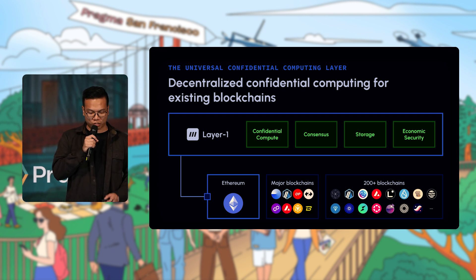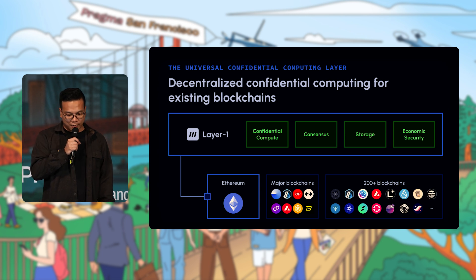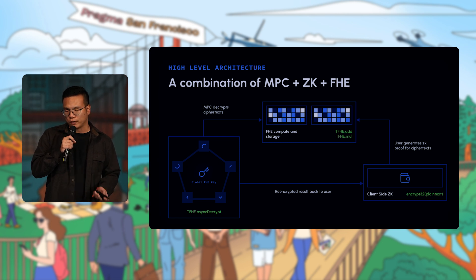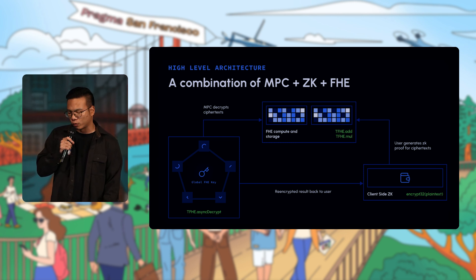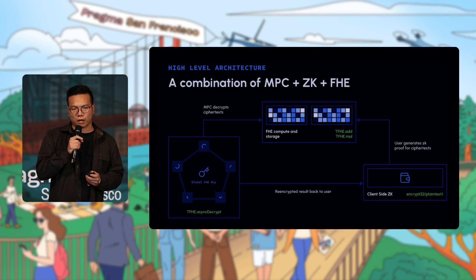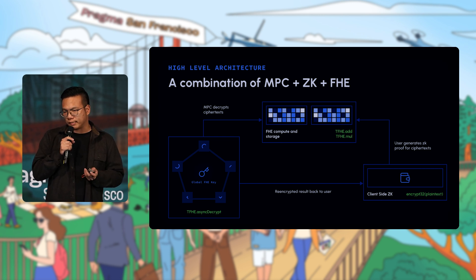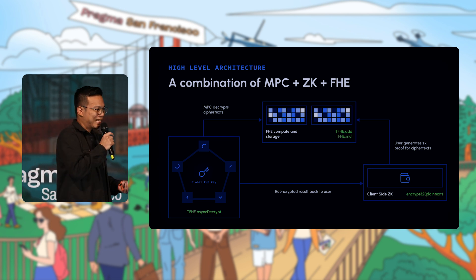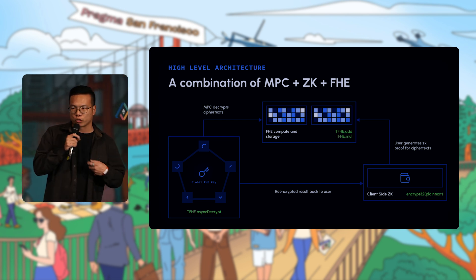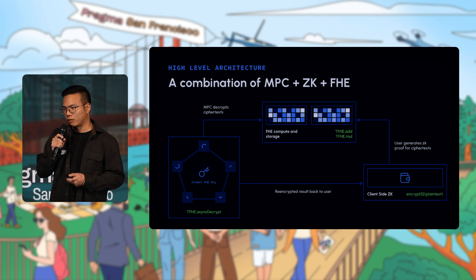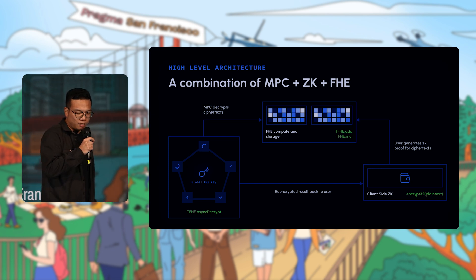From a high level, what we're building is a confidential compute layer for existing blockchains like Ethereum and major L2s. This is a coordination across FHE, ZK, and MPC. For decryption, an MPC network ensures the private key is never held by a single party. To decrypt something, you need a threshold of parties to do partial decryptions and combine enough of a threshold to recreate the plaintext — guaranteeing no single party can decrypt everyone's balances.